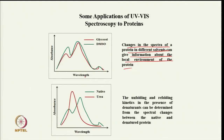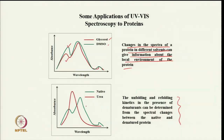Changes in the spectra of a protein in different solvents can give information about the local environment. The same protein at the same concentration shows quite different spectral profiles in DMSO versus glycerol. The unfolding/refolding kinetics in the presence of denaturants can also be determined from spectral changes — a native protein spectrum differs from the same protein in urea.